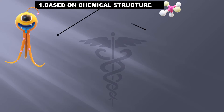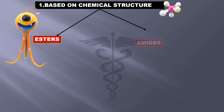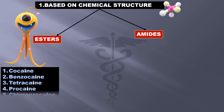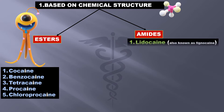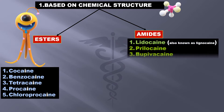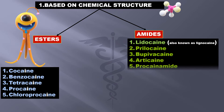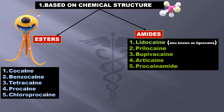Based on the chemical structure, they are divided into esters and amides. Examples of esters are cocaine, benzocaine, tetracaine, procaine, and chloroprocaine. Examples of amides are lidocaine, prilocaine, bupivacaine, articaine, and procainamide.